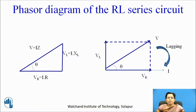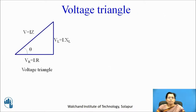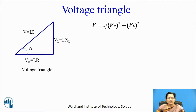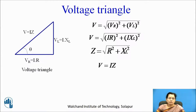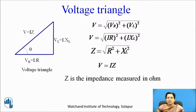From this vector diagram, we can draw the voltage triangle. Here Vr equals IR, Vl equals IXl, and V equals IZ, where theta is the angle between voltage and current. From the voltage triangle, the total voltage is V equals under root of Vr squared plus Vl squared. By substituting Vr as IR and Vl as IXl, we get total voltage as I times under root of R squared plus Xl squared. Taking current as common, Z equals under root of R squared plus Xl squared, and V equals I into Z, where Z is the impedance measured in ohms.